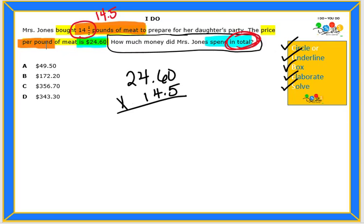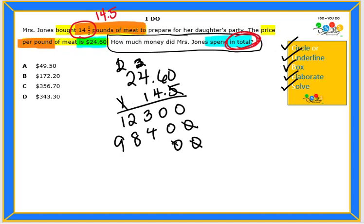You do not need to line up your decimals. Move one digit over. Move two digits over.